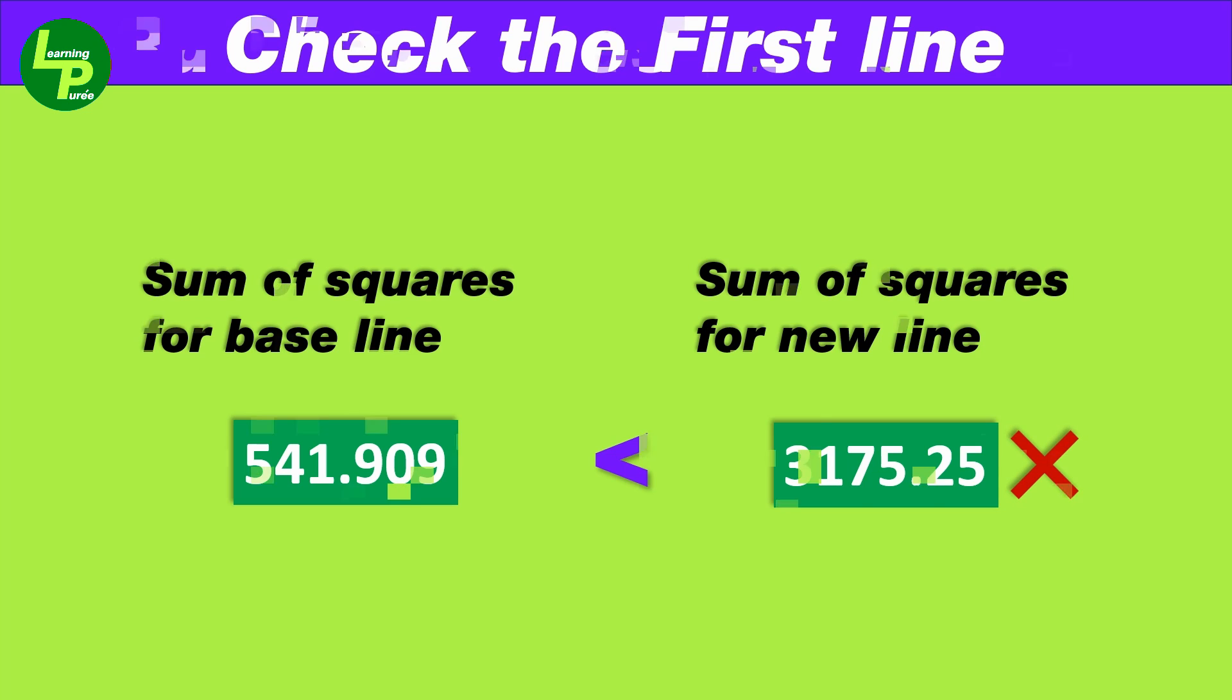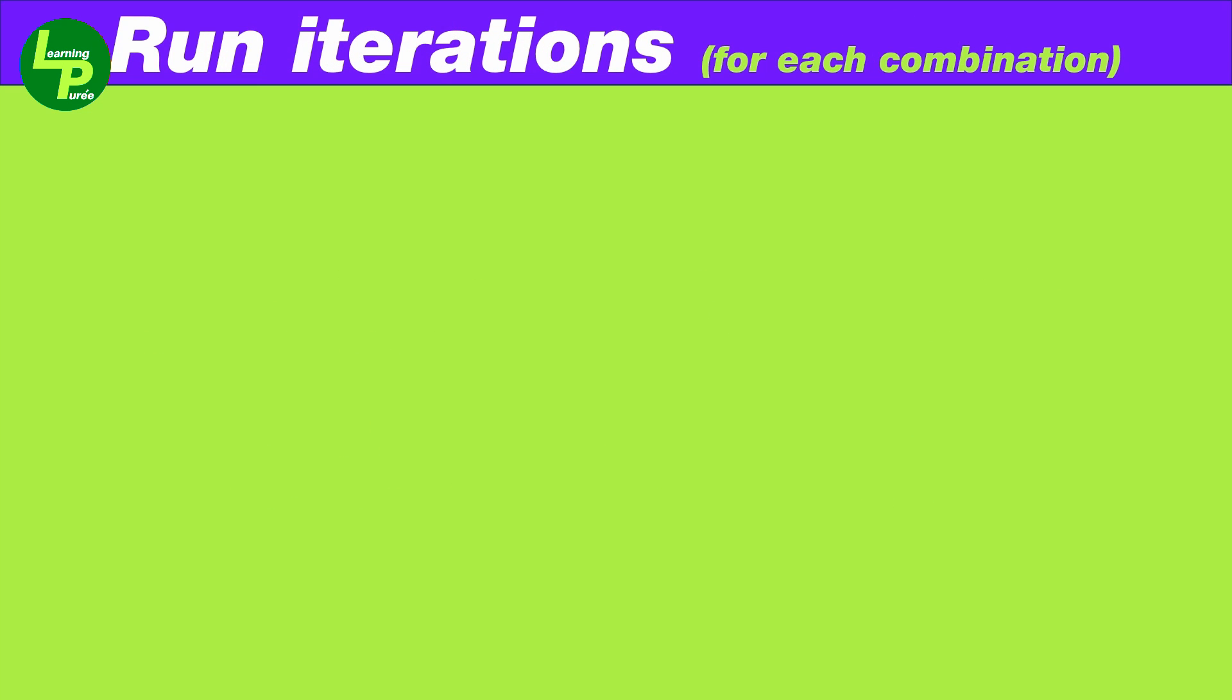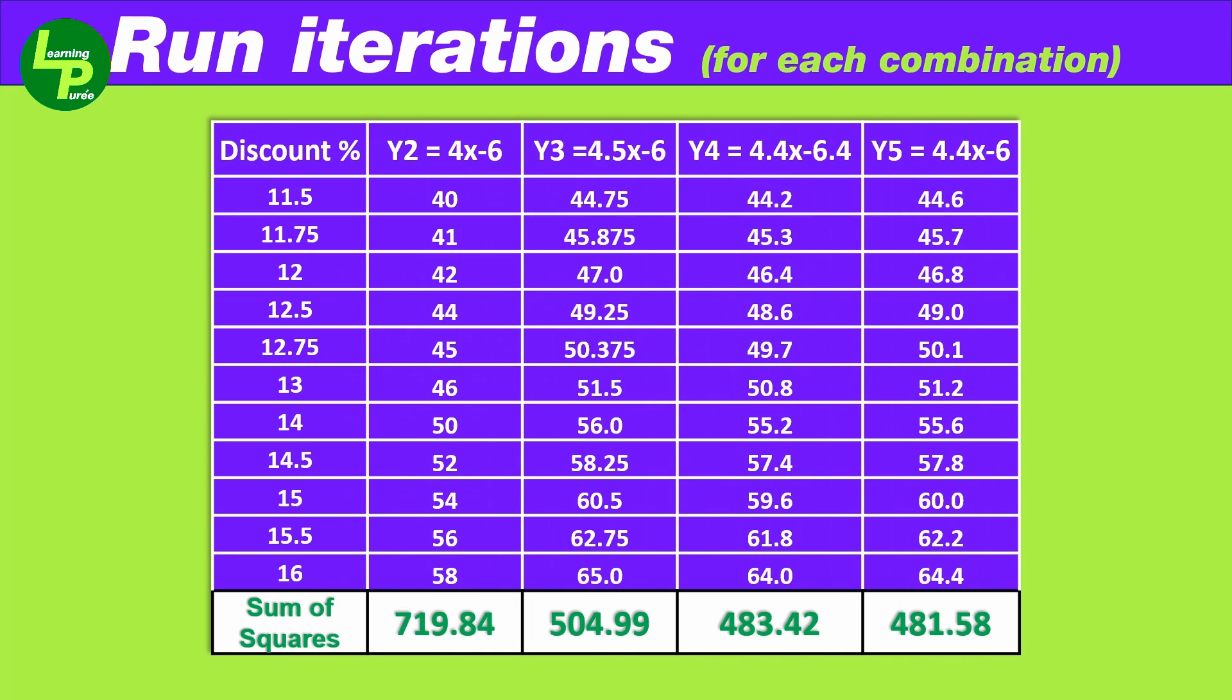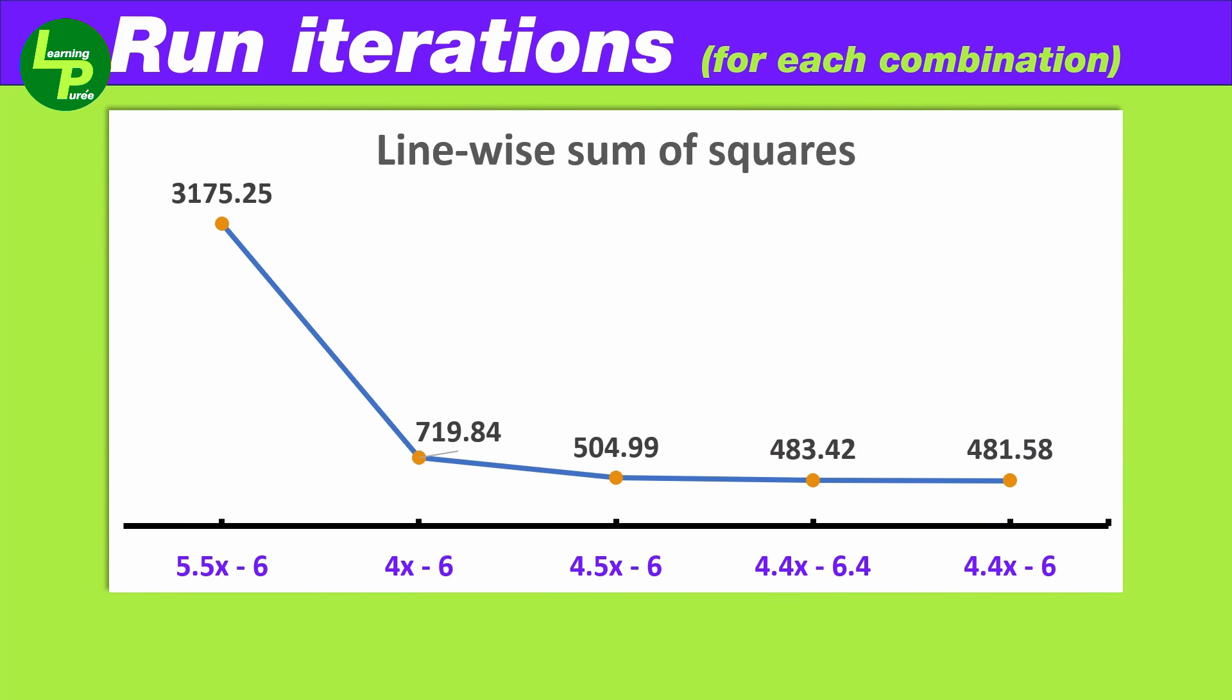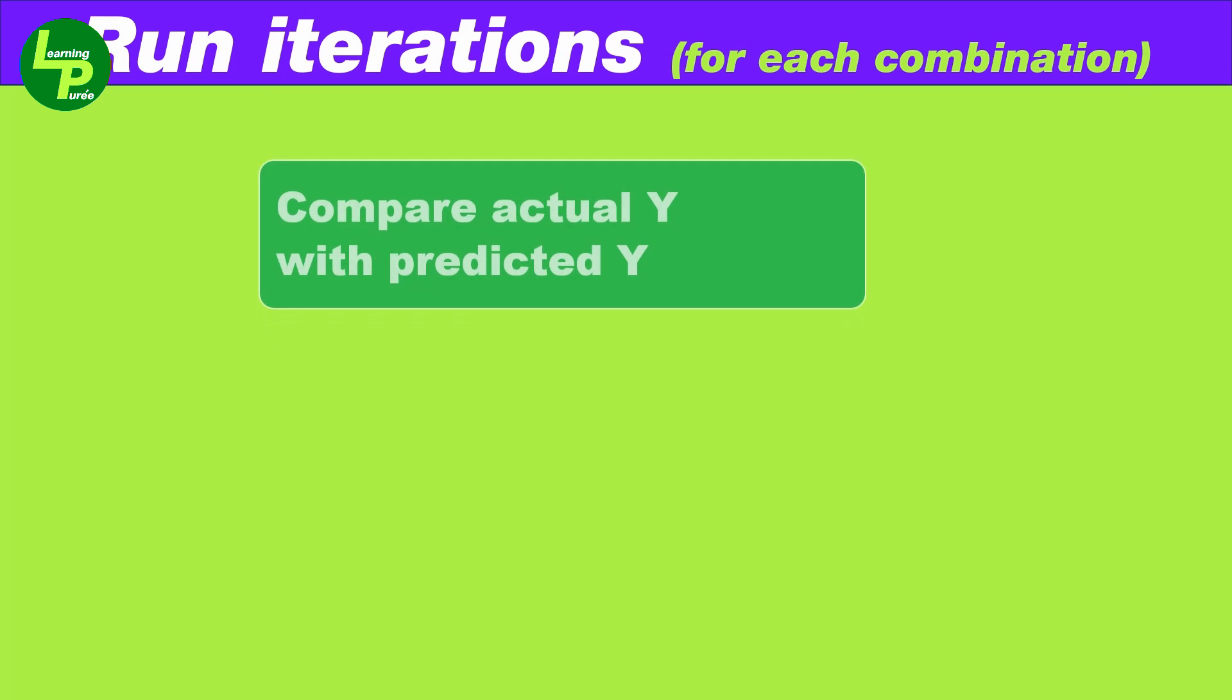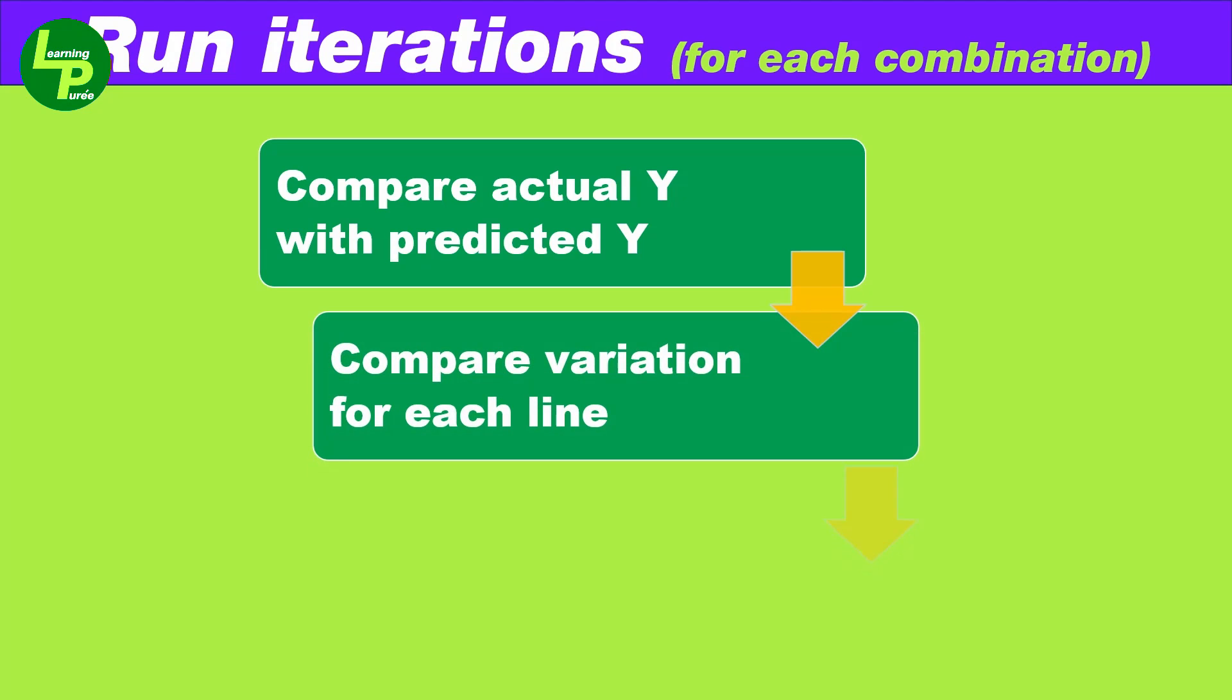Therefore, we will tweak the values of the slope and y-intercept of this line slightly to check for combinations of values above and below the existing one. The process yields us multiple lines with their respective sum of squares mentioned in the table. If we plot a line graph of the sum of squares for various lines, we see that the points depicted by the three lines at the bottom appear to have sum of squares lower than that of the baseline.